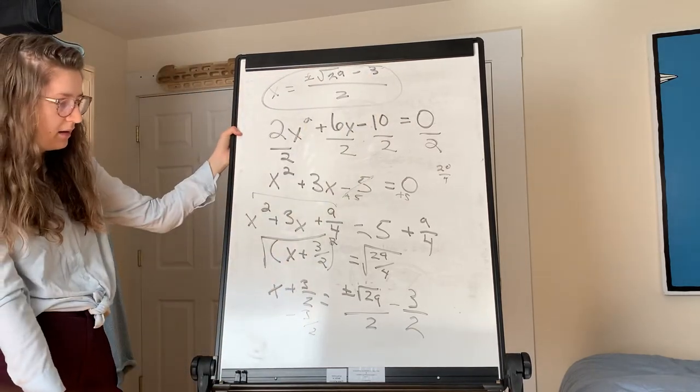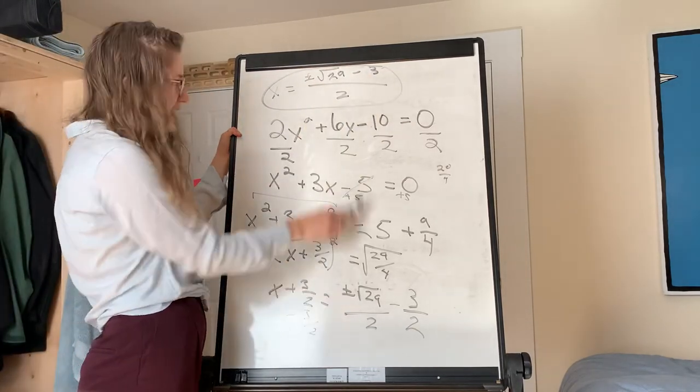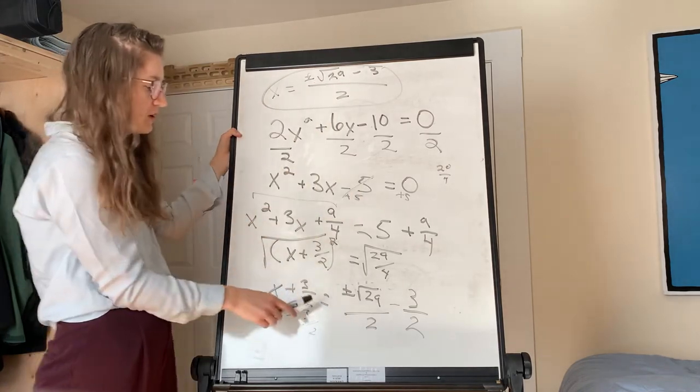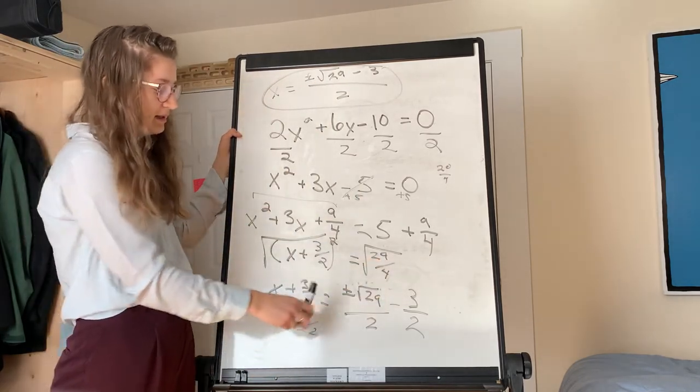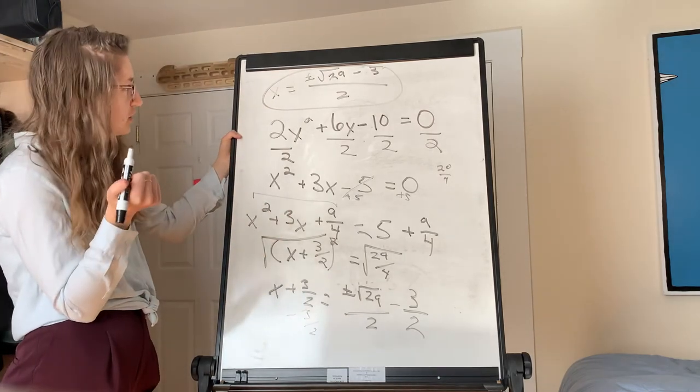Okay. We can't simplify this. It's all over 2 because since both terms are over 2, that's the same as the whole thing being over 2.